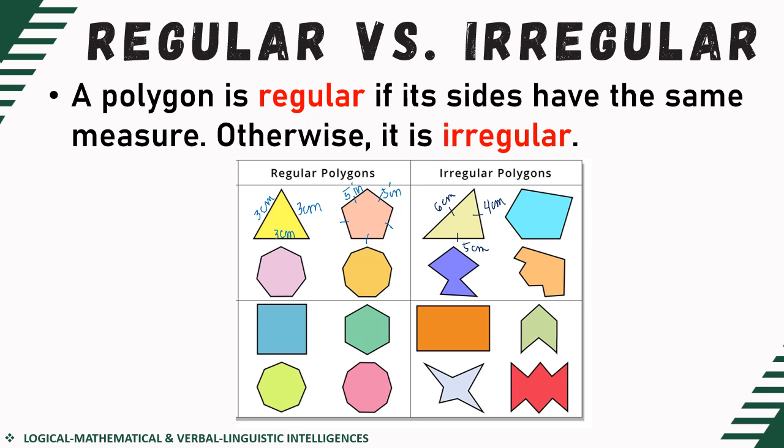Take note: even if we only have one different measure or different length in that particular figure, still, it is considered irregular. For the given figure to be considered regular, all the sides must have the same measurement or length. Otherwise, even if only one side is different, that will automatically be considered an irregular polygon.